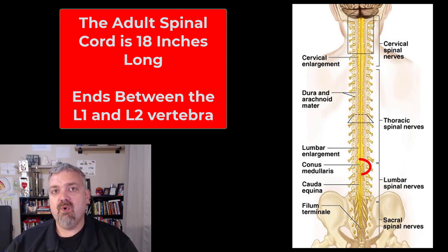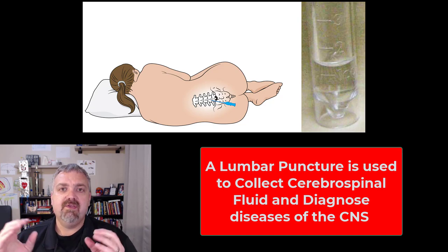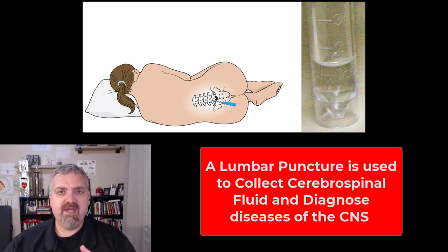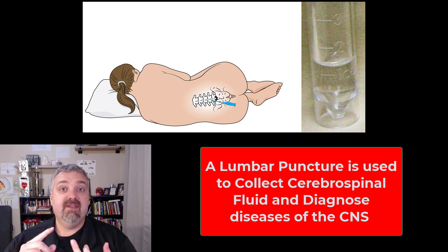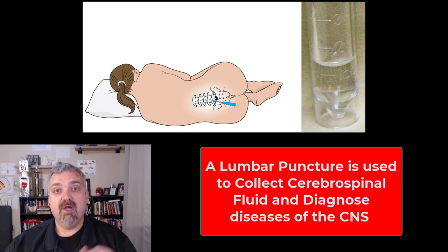The first key thing to note is where it ends. The adult spinal cord ends between L1 and L2 in the lumbar spine. This is significant because if you're going to do a lumbar puncture or spinal tap and go into the vertebral canal, you want to make sure you miss the spinal cord. So lumbar punctures are always done below L1 and L2. This is a way to extract cerebrospinal fluid, which should be sterile, to tell what's going on in the brain and spinal cord. It's used to diagnose diseases of the central nervous system — you can find evidence of meningitis, subarachnoid hemorrhage, and those types of things. The spinal cord ends between L1 and L2, and that's why lumbar punctures are done below that level.